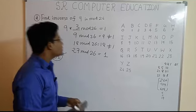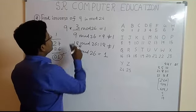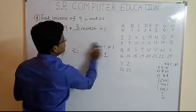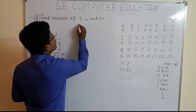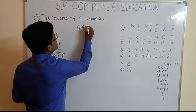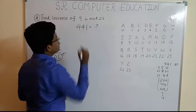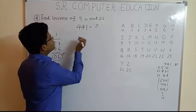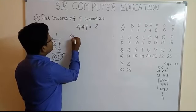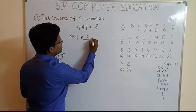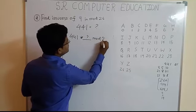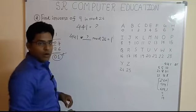In 3 cross 3 matrix condition, you might have to find the inverse of 441. Okay? Follow the same procedure. 441 multiply by what number mod 26 will give you answer 1.